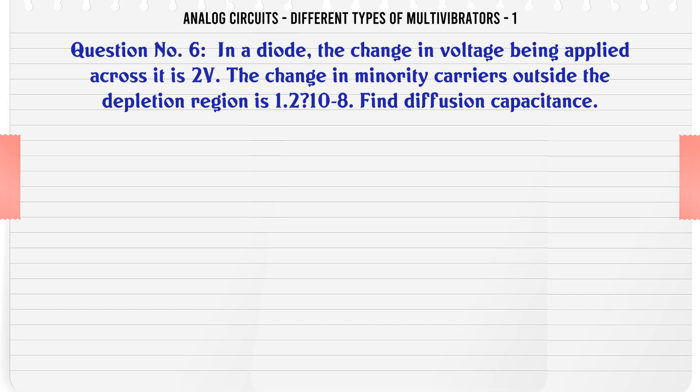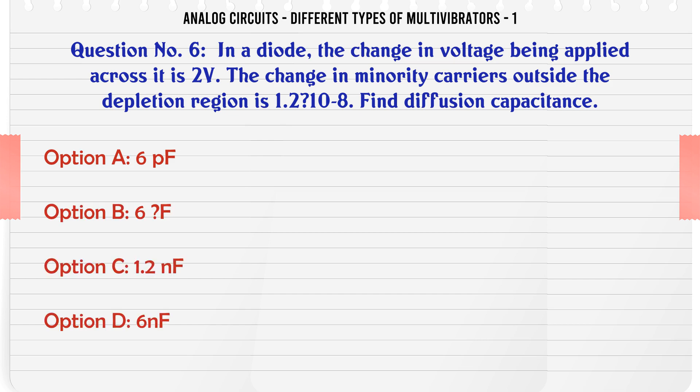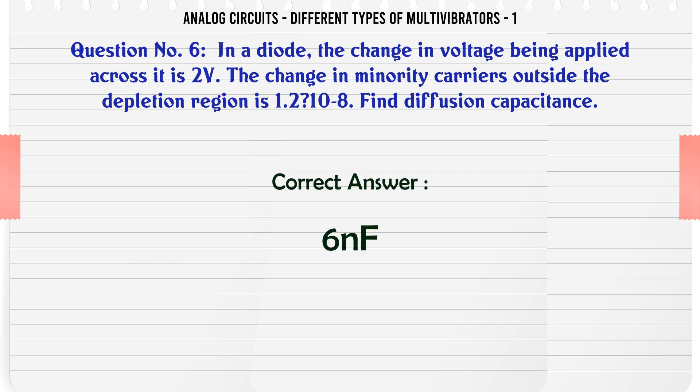In a diode, the change in voltage being applied across it is 2V. The change in minority carriers outside the depletion region is 1.218. Find the diffusion capacitance. A: 6 pF. B: 6 F. C: 1.2 nF. D: 6 nF. The correct answer is 6 nF.